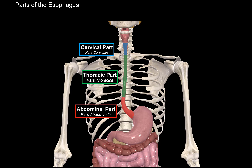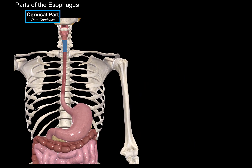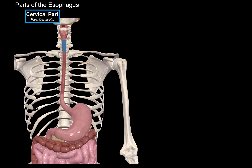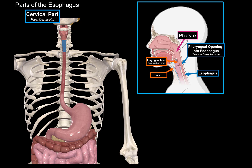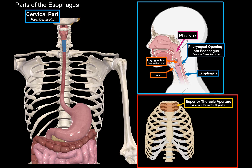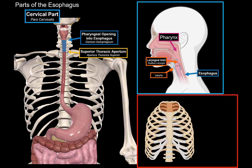So those are the three parts of the esophagus. Let's go through where each of these starts and ends. The cervical part starts at the pharynx. The pharynx has two openings: there's a laryngeal inlet which leads into the larynx, and then there's a pharyngeal opening into the esophagus, or osteum pharyngeum, which is going to be the start of the cervical part. The cervical part ends just before it enters the thoracic cavity through the superior thoracic aperture, or the upper opening of the ribcage.